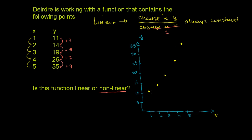So you can immediately see that this is not tracing out a line. If this was a linear function, all the points would be on a line that looks something like that — that's why it's called a linear function. In this case, it's not — it's non-linear. The rate of increase as x changes is going up.